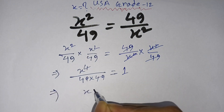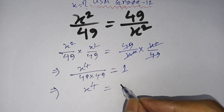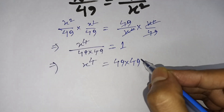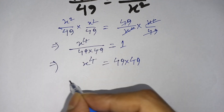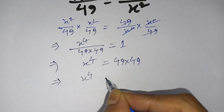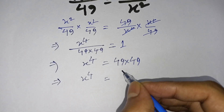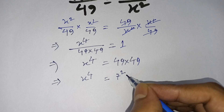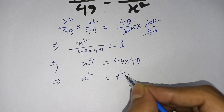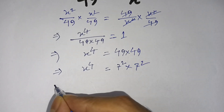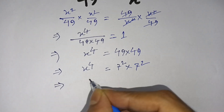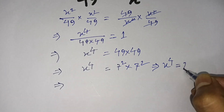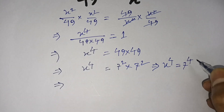So I can write x to the power 4 is equal to 49 times 49. Then x to the power 4 is equal to 7 squared times 7 squared, which equals 7 to the power 4.